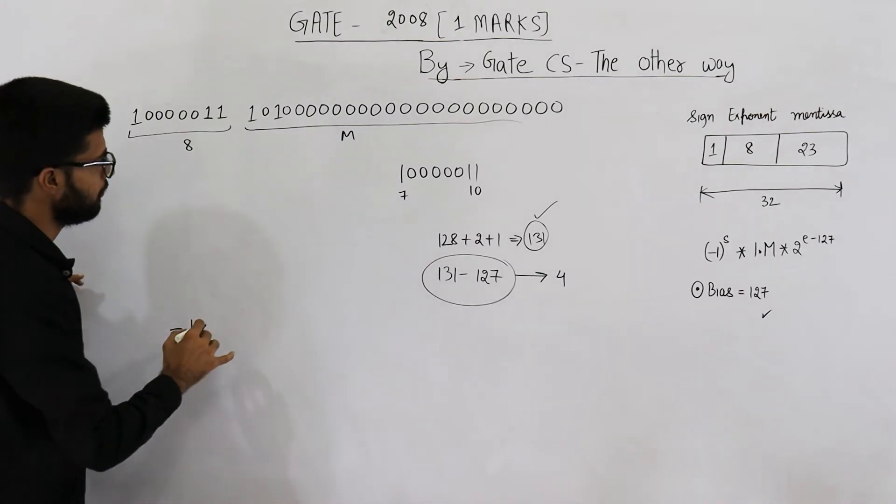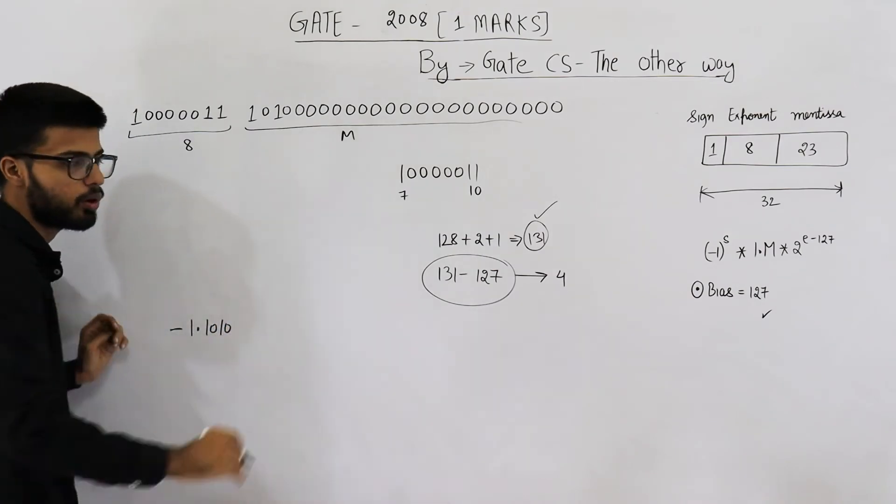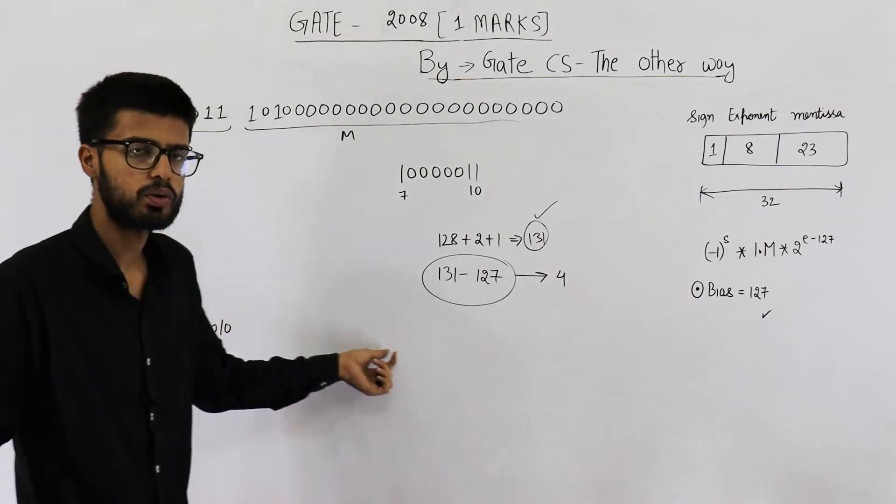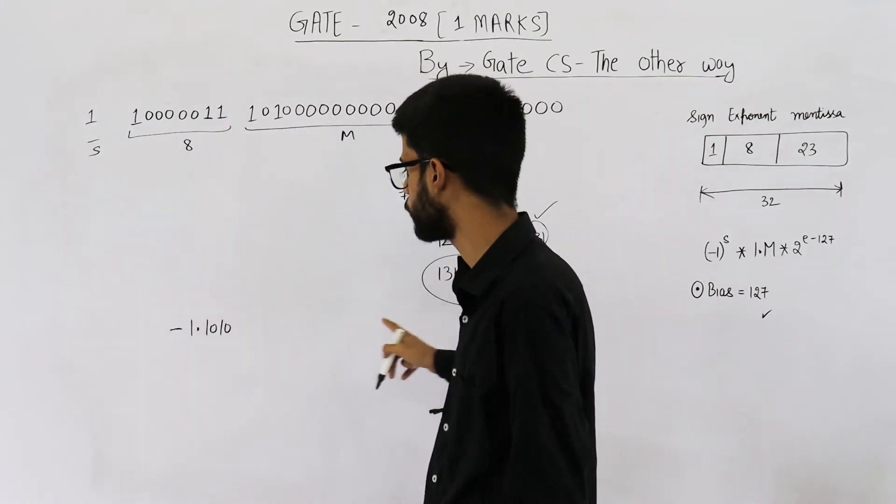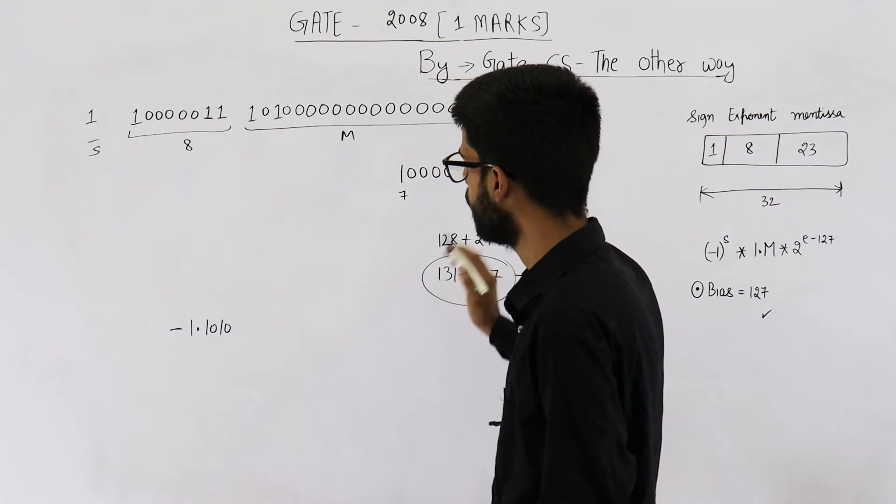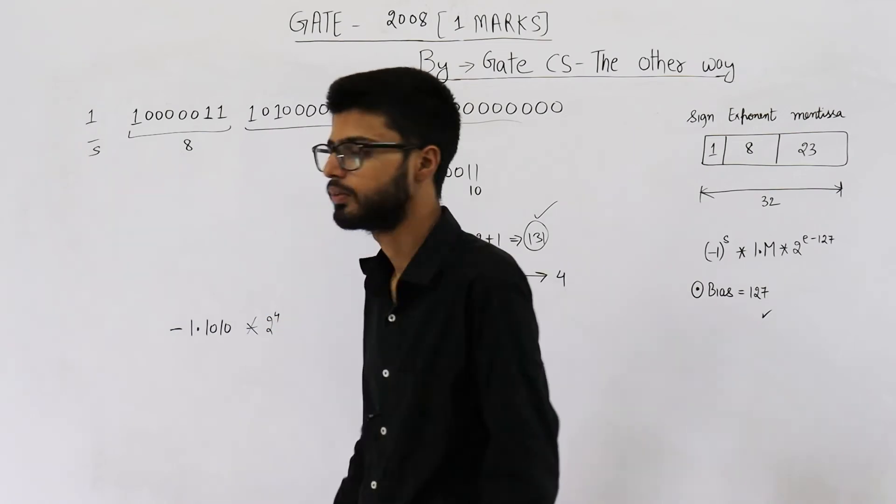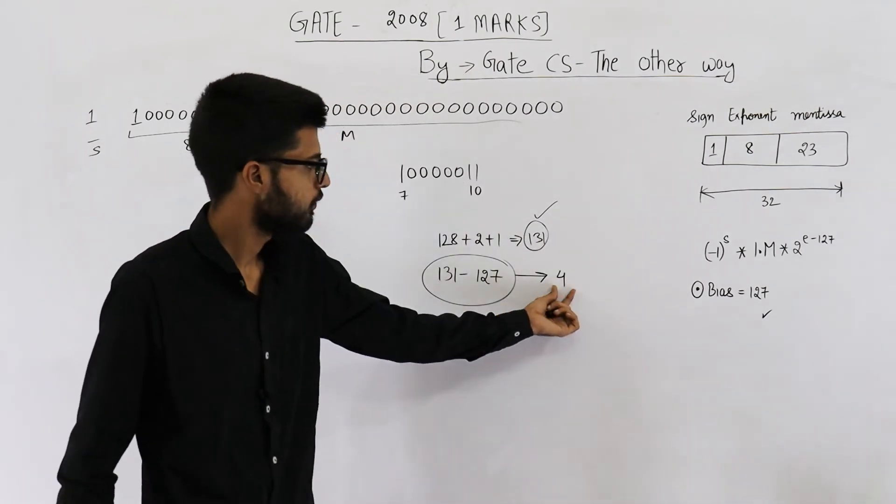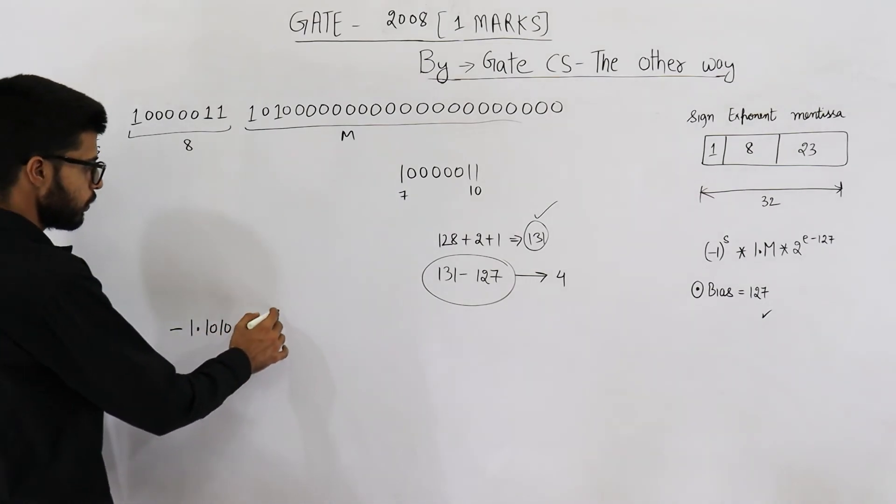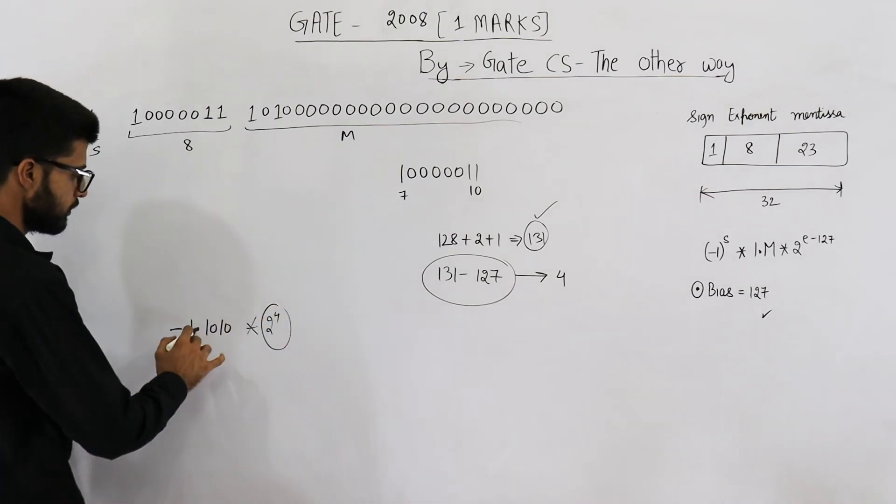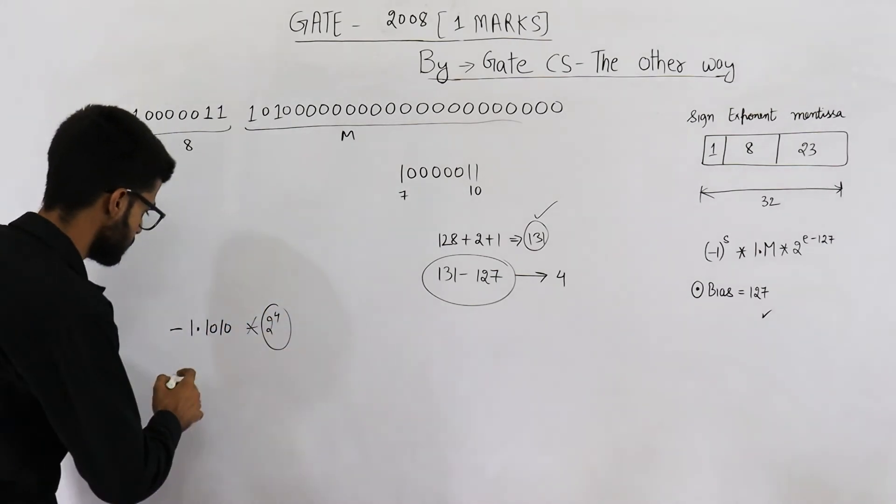So 1 point M, which is 1010 and a lot of zeros. We can neglect these zeros because they are to the right of radix point. These right most zeros. And into 2 raised to the power 4 because we have found out that actual exponent is 4.